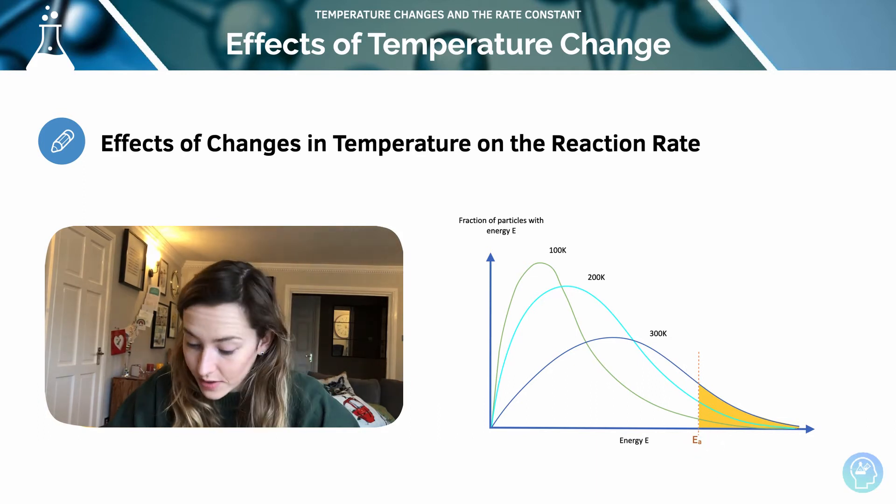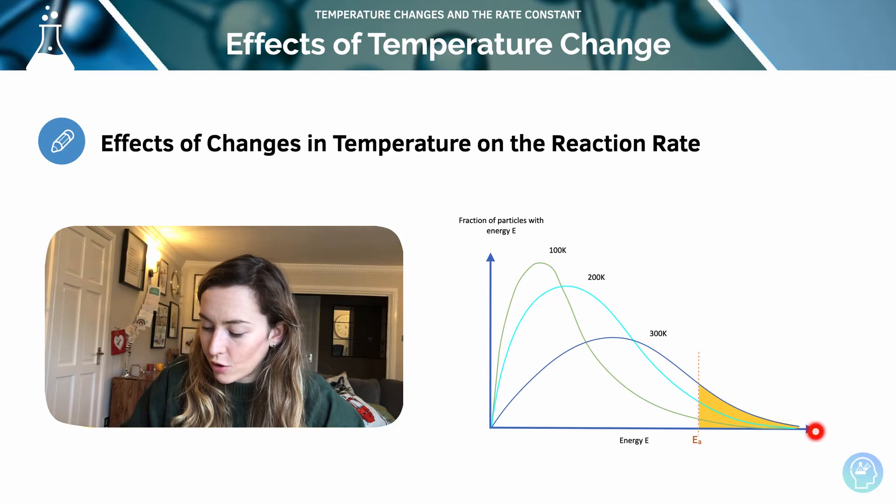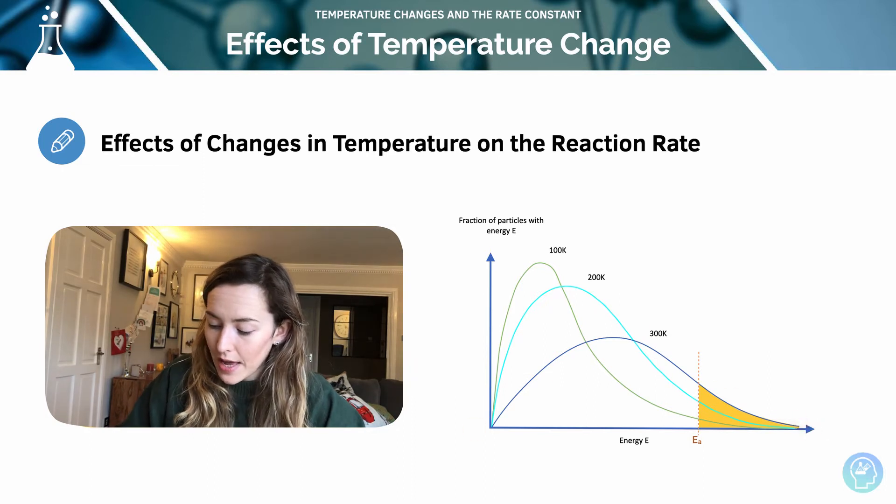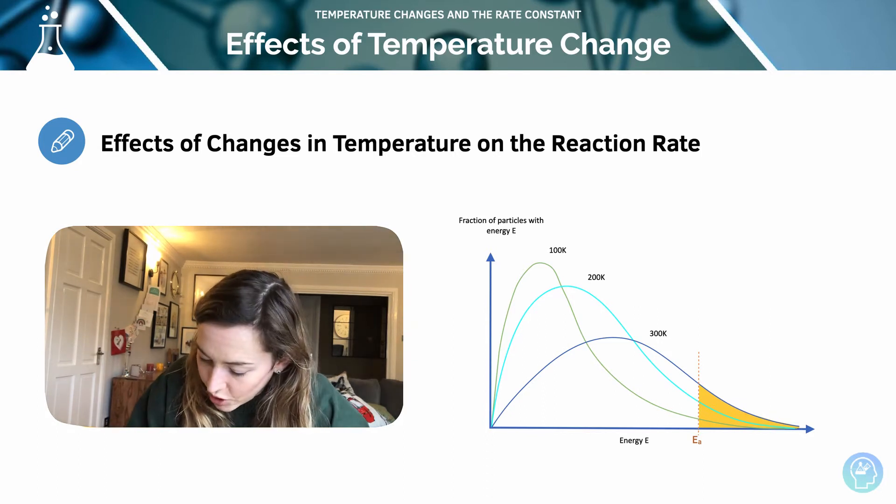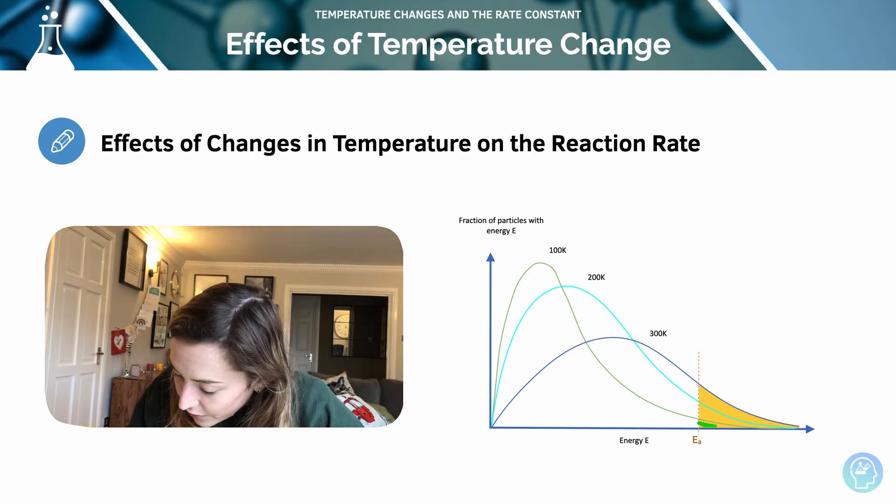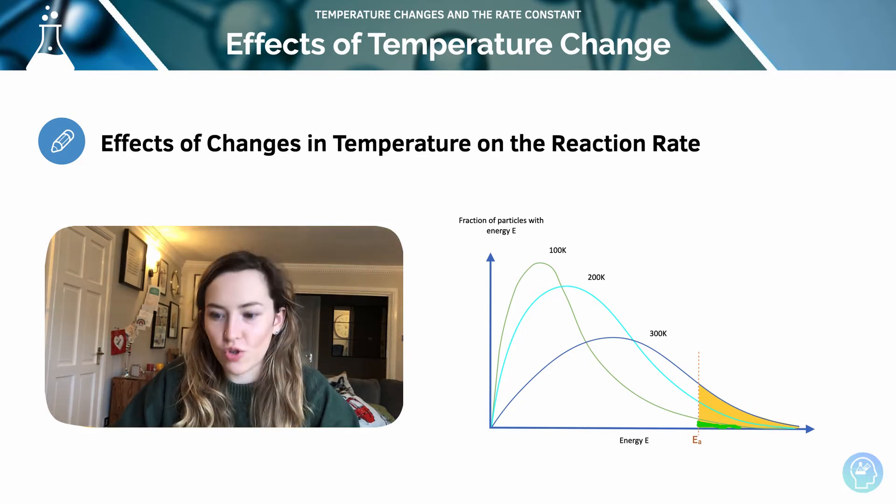We're going to refer to that quite a lot today. I've got three different lines and the lower line here is 300K, a very high temperature, and I'm getting lower and lower temperature. We can see that at the lowest temperature, 100 Kelvin, I've only got this very small fraction or very small portion under the line of that green curve there of particles that have at least the activation energy in order to react.